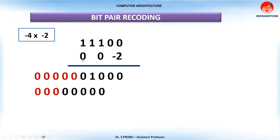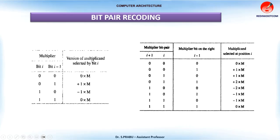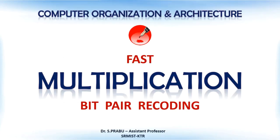Then multiply with 0 again — this result starts at the corresponding position — and add the sign extension. Now adding these results gives the final value. So minus 4 times minus 2 gives plus 8, and the leading 0 indicates a positive number. For this problem you need to know both the single bit pair recoding table and the double bit pair recoding table, then recode the multiplier only and multiply with the multiplicand to get the result. I hope you understand how fast multiplication can be achieved by bit pair recoding.